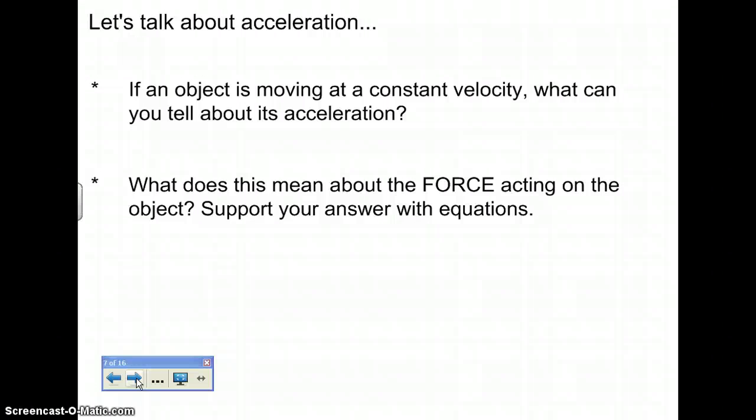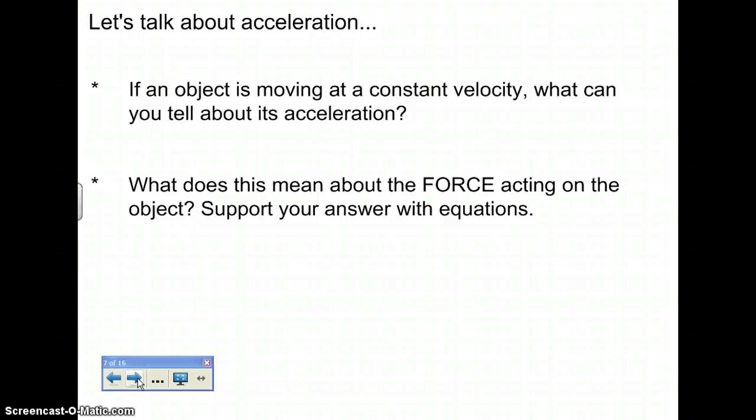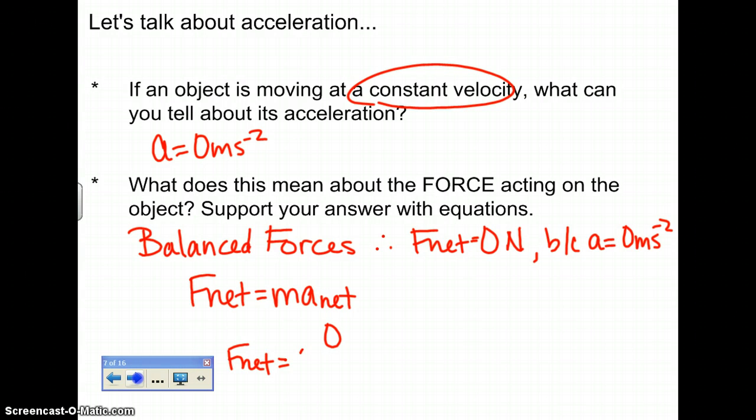But where does acceleration come to play with this? Because right now we're talking about force. So obviously we've got to go back and talk about acceleration. If an object is moving at a constant velocity, what can you say about its acceleration? Well, its acceleration should equal zero meters per second squared. Agreed? Because it's moving at a constant velocity, i.e., cruise control is set. So what does this mean about the force that's acting on the object? Well, it means that there are balanced forces, that the forces are balanced. Why are the forces balanced? Because your F net equals zero newtons. Because A equals, technically A net, equals zero meters per second squared. So the equation that we're looking at here is F net equals mass times A net. Whereas your A net equals zero, so your F net equals zero newtons.